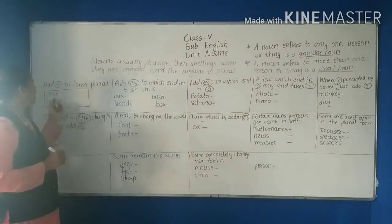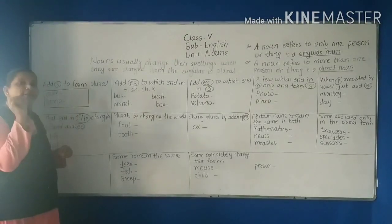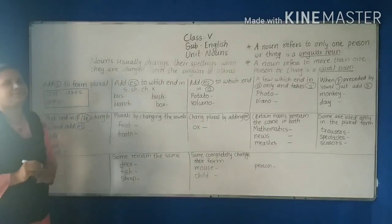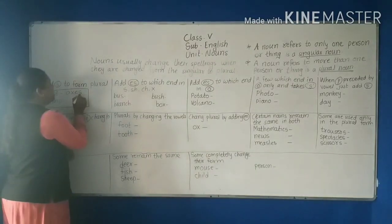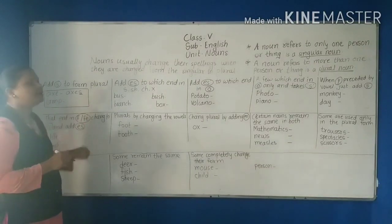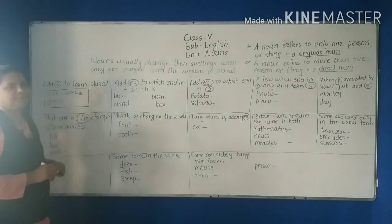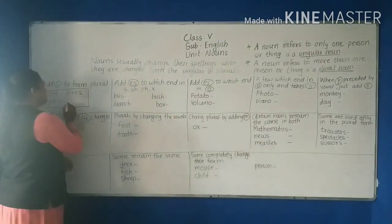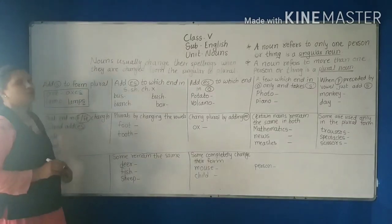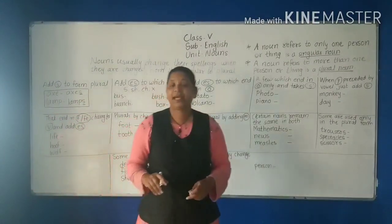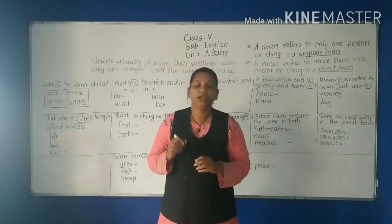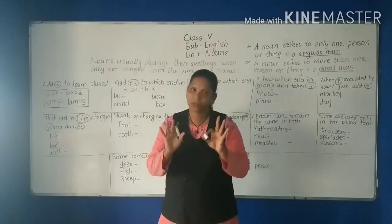The first rule: add 's' to form the plural. Certain nouns need only 's' added to form the plural form. For example, 'ox' becomes 'oxes' — no, simply add 's'. Like 'lamp' is singular; add 's' and it becomes 'lamps'. So for certain nouns, just adding 's' makes them plural.